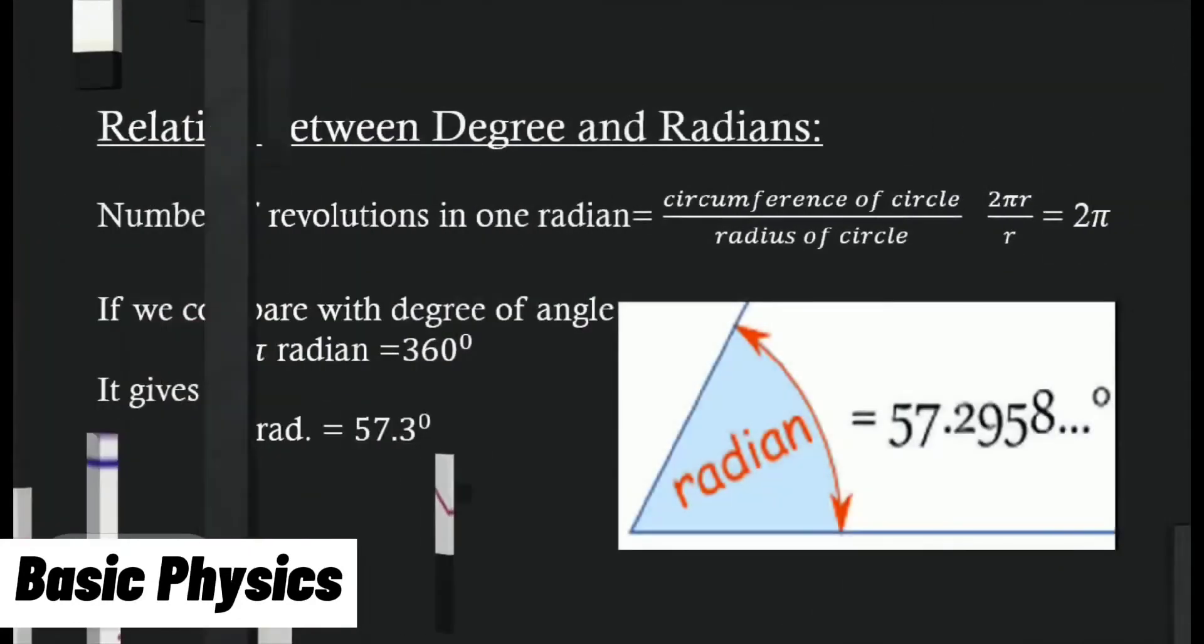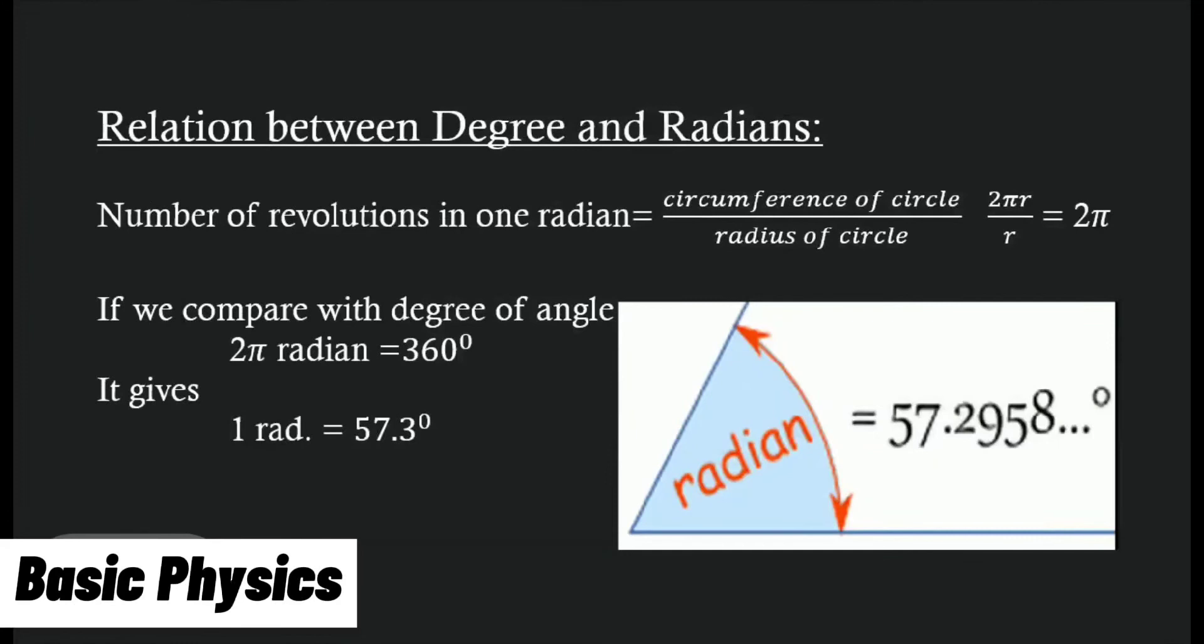Relation between degree and radians: Number of revolutions in 1 radian equals circumference of circle by radius of circle. So 1 revolution equals 2π radian. If we compare degree and radian, 2π radian equals 360 degrees, and 1 radian equals 57.3 degrees.